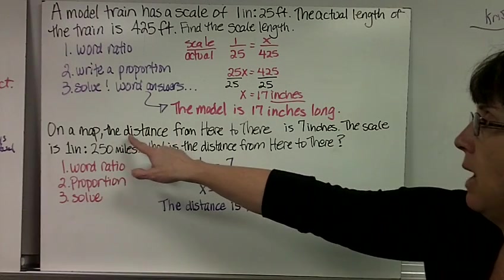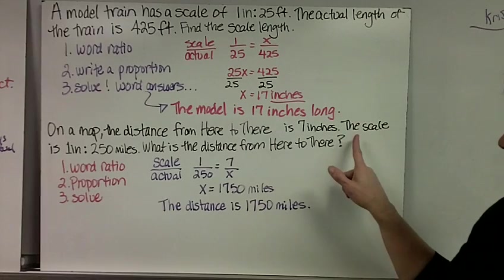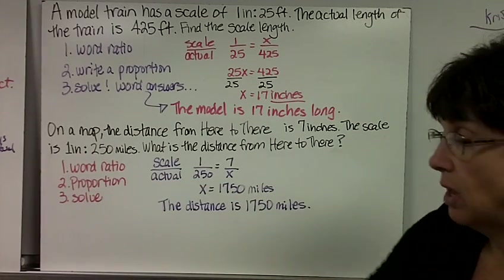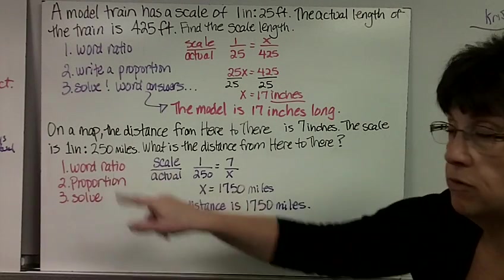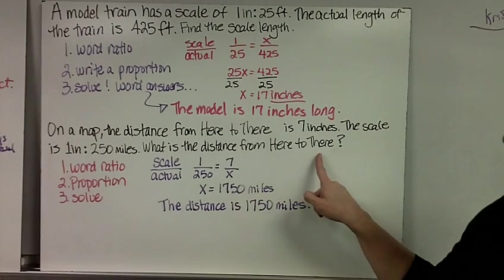Last example. On a map, the distance from here to there is 7 inches. The scale is 1 inch equals 250 miles. That means 1 inch on the map is 250 miles in real life. What is the distance from here to there?